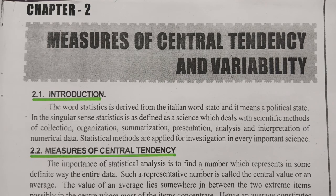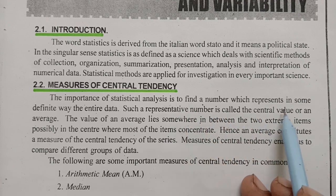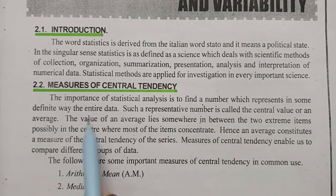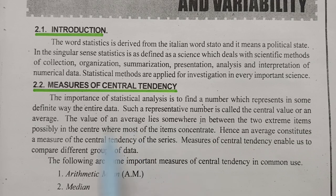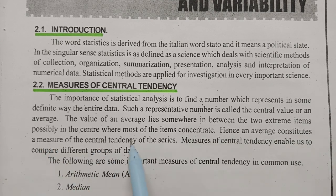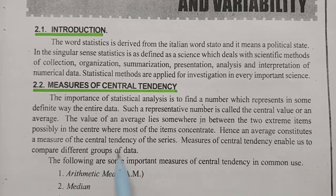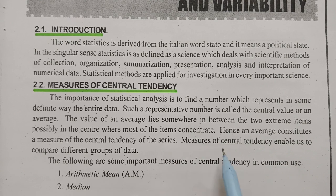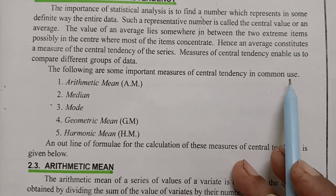What are measures of central tendency? The importance of statistical analysis is to find a number which represents in some definite way the entire data. Such a representative number is called the central value or an average. The value of an average lies somewhere between the two extreme items, possibly in the center where most of the items concentrate. Hence an average constitutes a measure of the central tendency of the series, and it enables us to compare different groups of data.